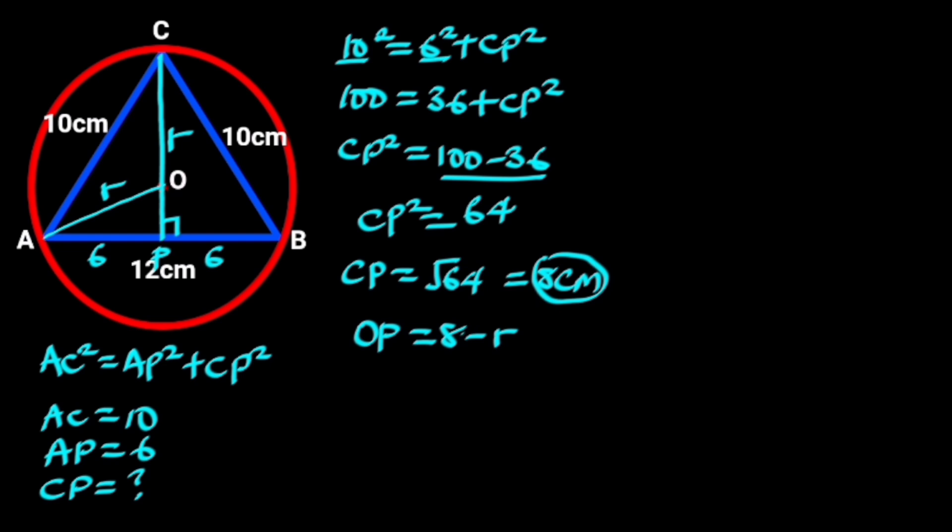Now considering triangle AOP which is also a right angle triangle, we will also apply Pythagoras theorem to find R. From Pythagoras theorem, AO square equals AP square plus OP square. From the figure, AO is R, OP is 8 minus R, and AP is 6.